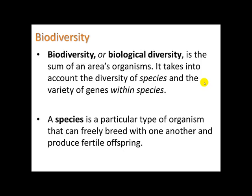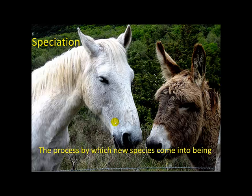A species is a particular type of organism that can freely breed with one another and produce fertile offspring. Humans and humans can produce baby humans, but humans and chimpanzees cannot produce a human-chimpanzee — we're different species. Cats and dogs don't breed together. Here we see a horse with a donkey — two different species. The offspring they produce is called a mule, but that mule cannot mate with another mule, so they do not produce fertile offspring.